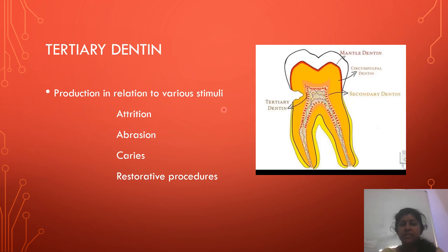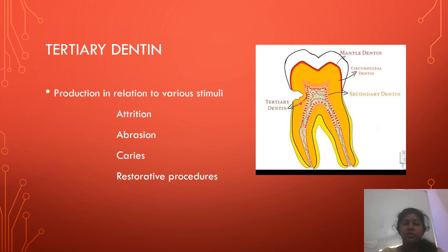Tertiary dentine is deposited only in response to a mechanical injury or pathology. In case of external stimuli like caries or trauma, when the odontoblasts or their processes get damaged, a localized deposition of dentine takes place in an attempt to protect the pulp and seal the zone of injury — this is tertiary dentine. In comparison with primary and secondary dentine, the rate of deposition of tertiary dentine is much faster. Due to this rapid deposition, it is less organized — there may be fewer dentinal tubules or the dentinal tubules may be wider, and they may have an irregular course.